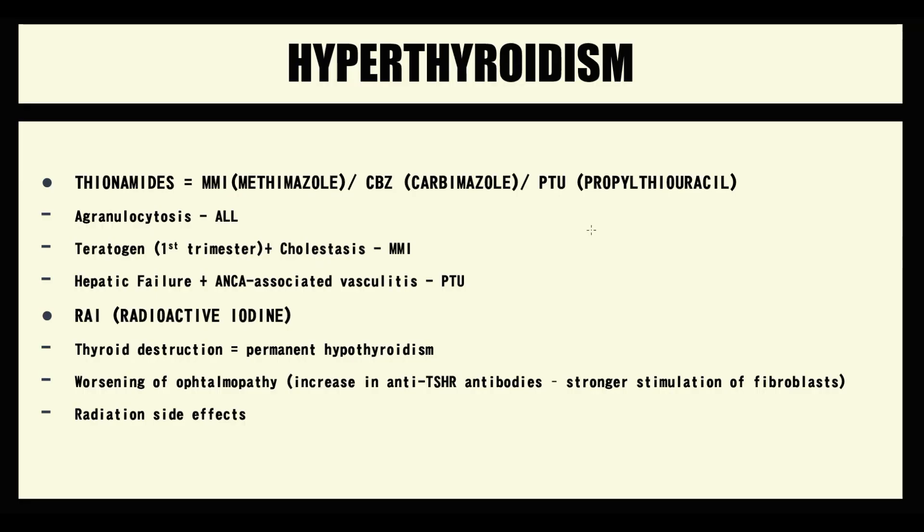Antithyroid drugs block the production of thyroid hormones. We use them when the production of thyroid hormones becomes substantially higher than normal, creating a huge concentration of thyroid hormones in the blood. We call this condition hyperthyroidism.